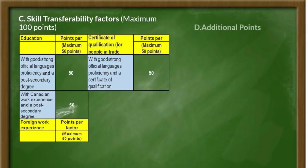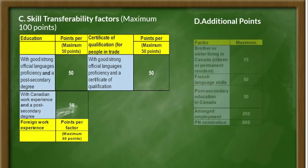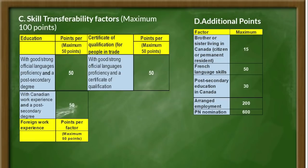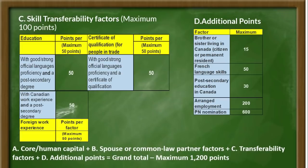The fourth factor is additional points, divided into different sub-factors: having a blood relative who is a permanent resident or citizen gives 15 points; French language skills give up to 50 points; Canadian education gives 15 points; PGWP gives 200 points; and a Provincial Nomination gives 600 points. If you have a Provincial Nomination, you can get a maximum of 600 points. Combining all 4 factors — core human capital, spouse factors, skill transferability, and additional points — you can get up to 1200 points, depending on your case.